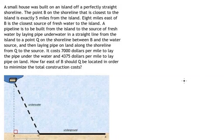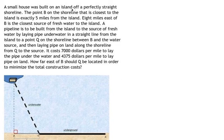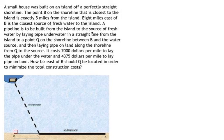Hello everybody. Today I will talk about calculus. The topic today is about application of derivatives. Now I will show you how to answer: a small house was built on an island with a perfectly straight shoreline. The point B on the shoreline closest to the island is exactly five miles from the island. Eight miles east of B is the closest source of fresh water. A pipeline is to be built from the island to the water source.